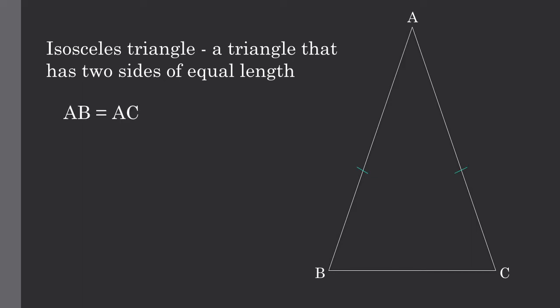Now we are going to discuss an extension on this definition: a theorem that states that if the triangle is isosceles, angle B will equal angle C.